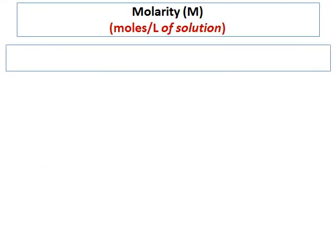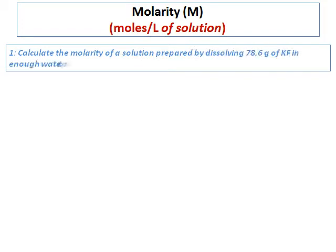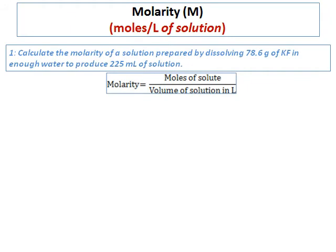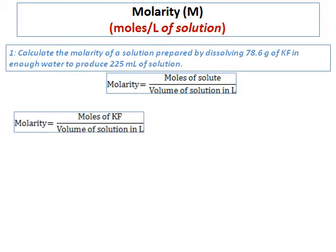Now let's do a question on molarity. Calculate the molarity of a solution prepared by dissolving 78.6 grams of KF in enough water to produce 225 milliliters of solution. Molarity is defined as moles of solute divided by volume of solution in liters. Here, potassium fluoride is the solute, so we calculate molarity as moles of KF divided by volume of solution in liters.